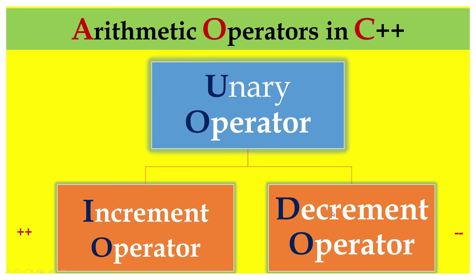So, what is an increment operator and what is a decrement operator? Increment operator is nothing but plus-plus — you are going to increment by one. And decrement operator is nothing but minus-minus — you are going to subtract one. Increment means you are going to add one, and decrement means you are going to subtract one.